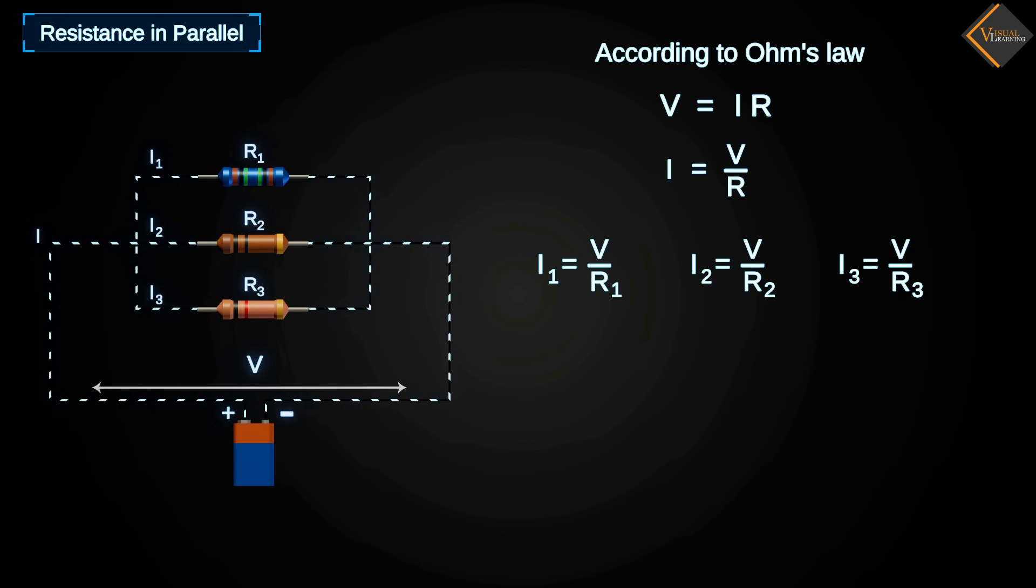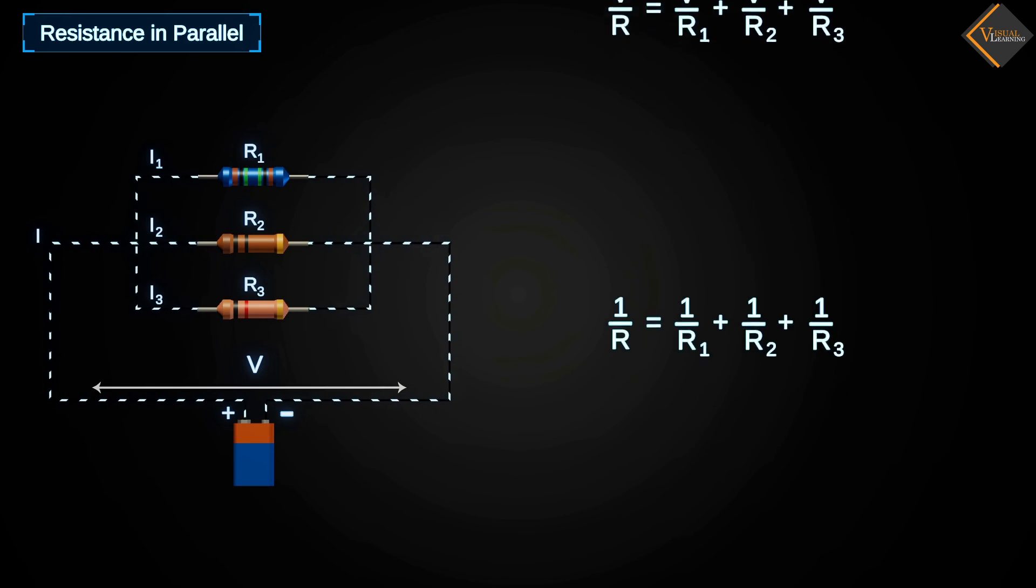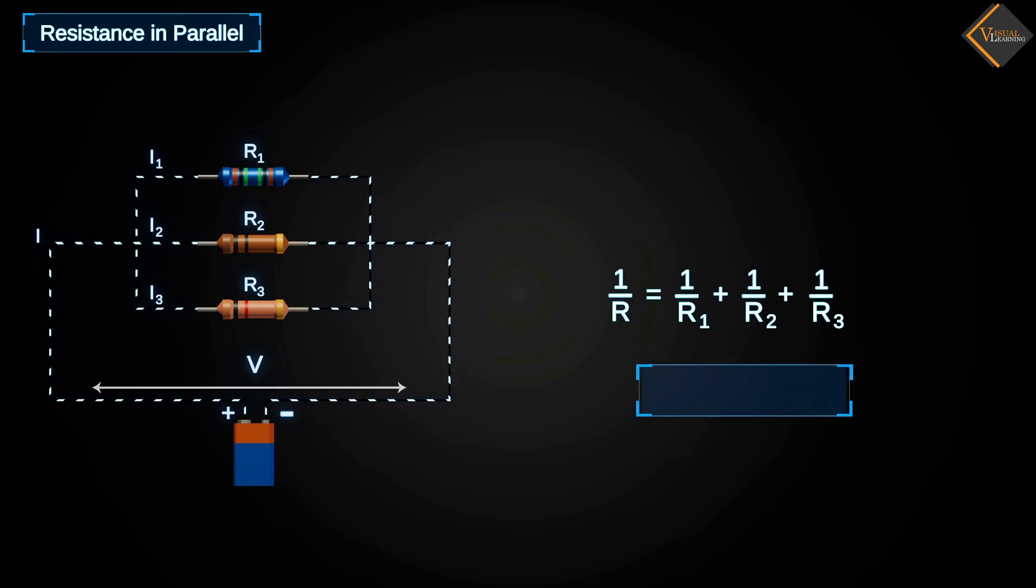Now, if we sum up these three currents, we get an equation where potential is common. By replacing I with V by R on both sides of the equation and cancelling out V, we get an equation that gives us the total resistance in a parallel connection.